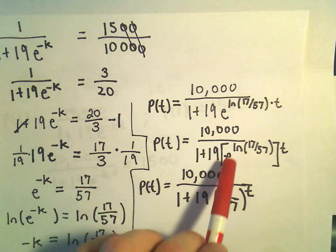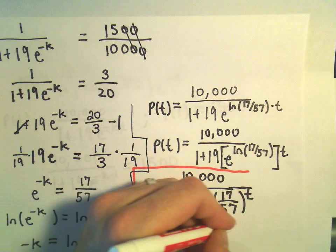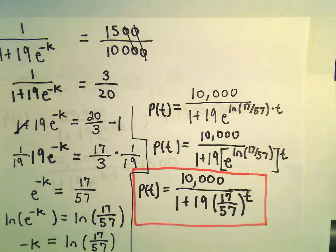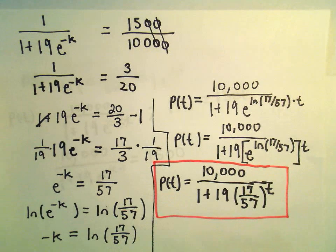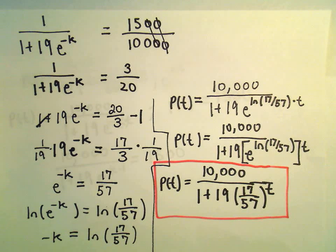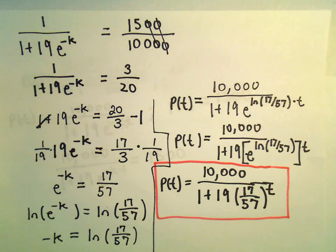And you'll get a much cleaner and really more accurate formula. So there's part a down. We'll do part b here in another video just simply figuring out how long does it take for that population to actually get to 4,000. We'll be right back.